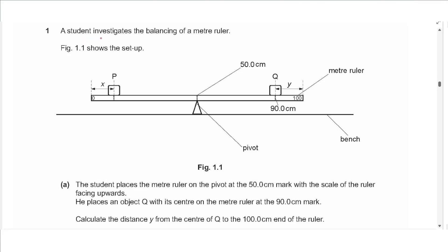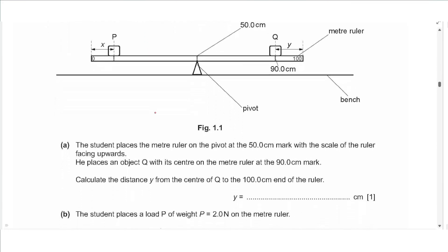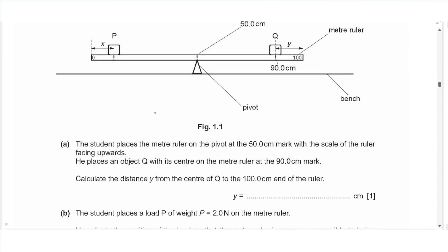Question 1 says a student investigates the balancing of a meter ruler. Figure 1.1 shows the setup. The student places the meter ruler on the pivot at the 50.0 cm mark with the scale facing upwards. He places an object Q with its center on the meter ruler at the 90.0 cm mark. Calculate the distance y from the center of Q to the 100 cm end of the ruler. So we subtract 100 minus 90, that gives us 10.0 centimeters.